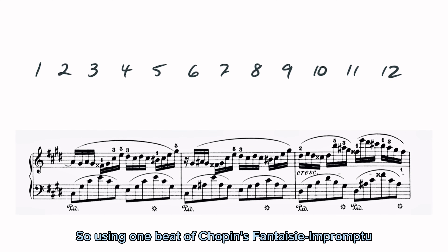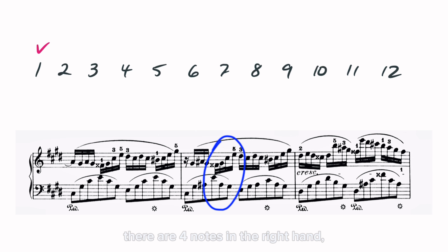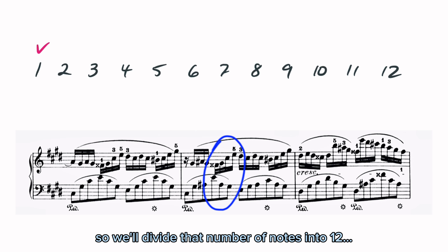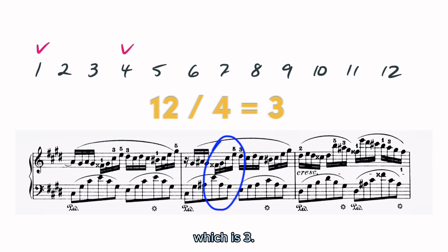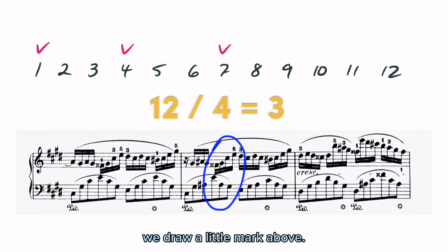Using one beat of Chopin's Fantasy Impromptu as an example, there are four notes in the right hand, so we divide that number of notes into twelve, which is three. Therefore, every three numbers, we draw a little mark above.